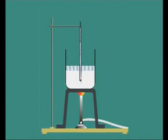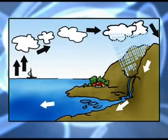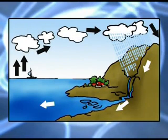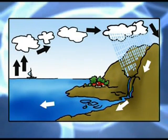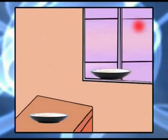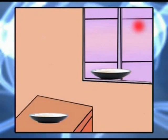Depending upon temperature, water changes its state. At 0 degrees Celsius, ice changes into water — that is, it changes from solid to liquid state. At 100 degrees Celsius, it changes into vapor — that is, from a liquid to a gaseous state. So: ice to water to vapor.